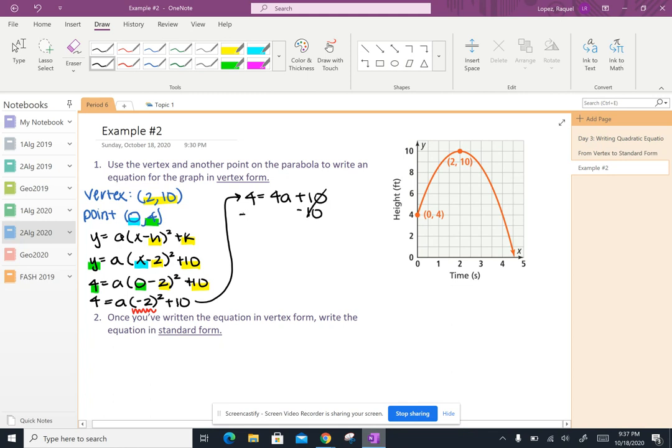So I'm going to subtract 10 on both sides of my equation. 4 minus 10, that's negative 6 equals 4a. Divide both sides by 4. Divide by 4. And I have my fraction. So I'm going to go ahead and simplify that as negative 3 halves equals a.